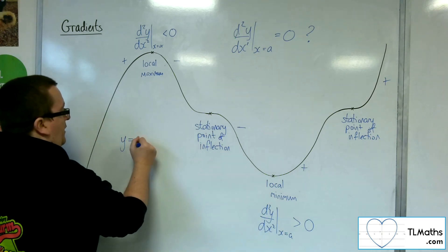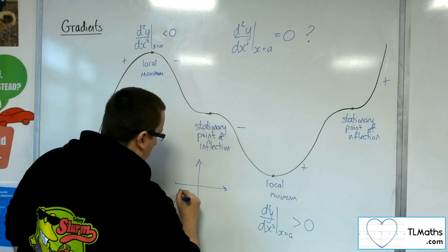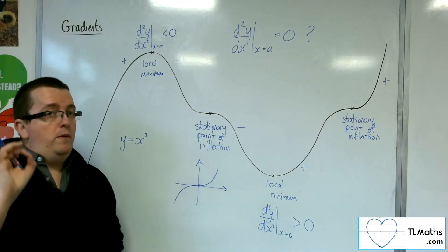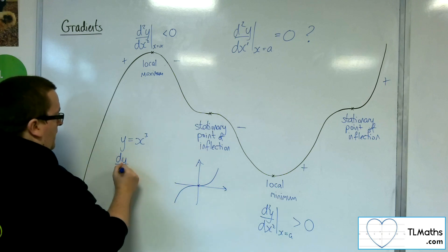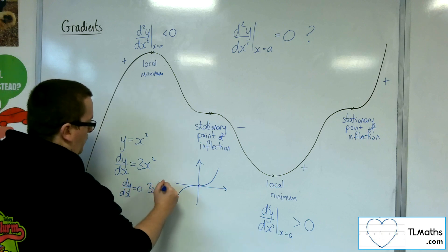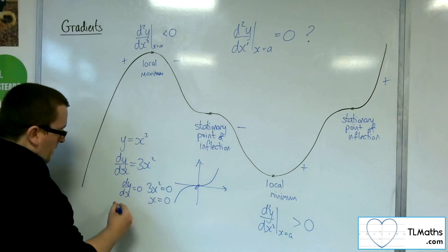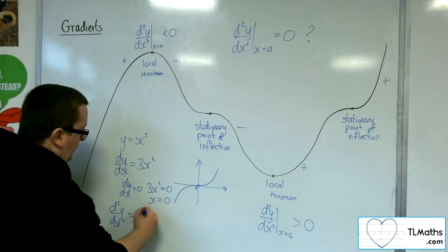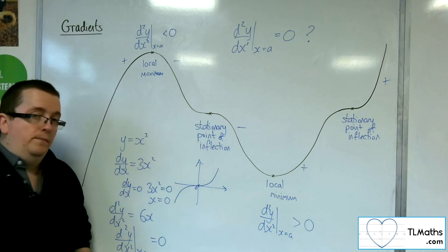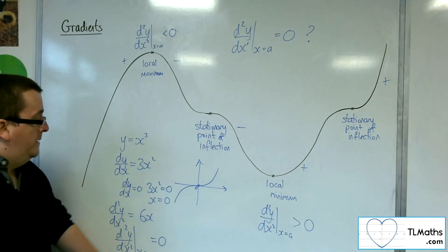First example: y = x³. We know it has a stationary point of inflection at 0. Differentiating gives dy/dx = 3x², and setting that equal to 0 gives x = 0, which is exactly what we expected. The second derivative is 6x. Substituting x = 0 into the second derivative gives 0. So this seemingly confirms that a second derivative of 0 at a stationary point means a point of inflection.